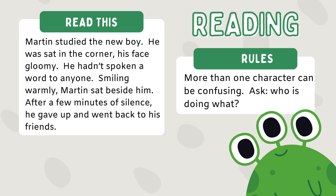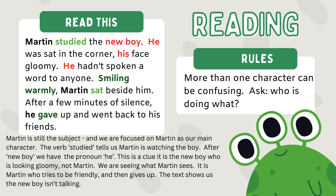Then we get the issue sometimes where it's both long and there's more than one character. We have to unpick who is doing what, because otherwise it's very easy to make mistakes in our understanding. So again, we have to look at the subject and the verbs to begin to unpick who did what. There are clues about who Martin is and clues about the new boy. It's Martin who studied the new boy — he is the subject of the sentence and 'studied' is the verb. The new boy is being studied by Martin.